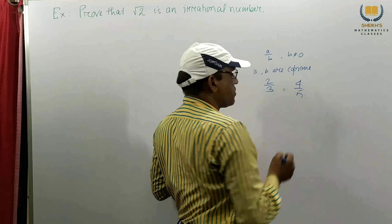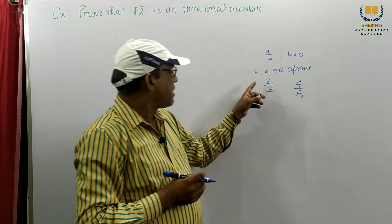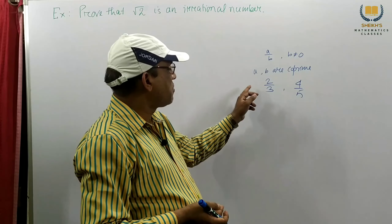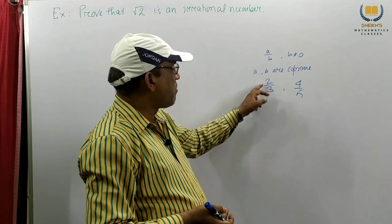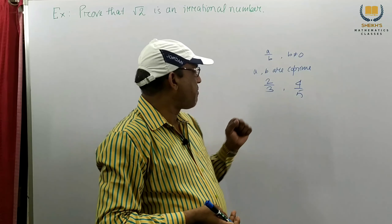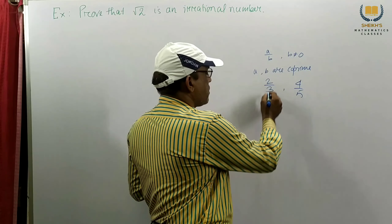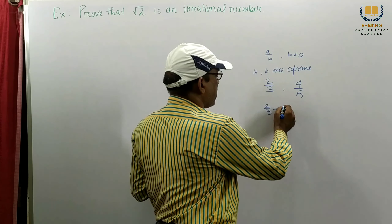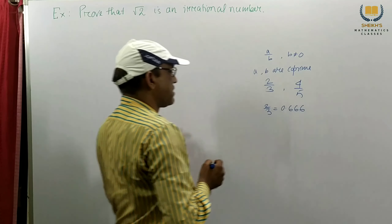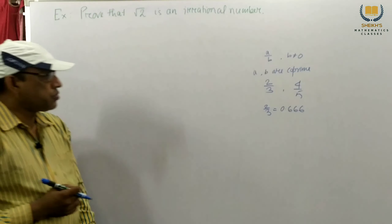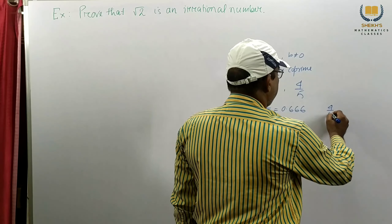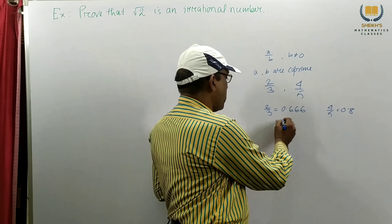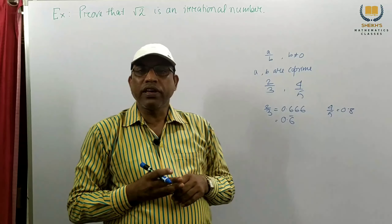Suppose 4 by 5 — this is also a rational number. A rational number is a number which can be expressed in the form A by B, or sometimes we write P by Q form. The denominator cannot be 0, and both numbers should be co-prime. And if we divide this, it has ending digits. Suppose 2 by 3 — if we divide, we get 0.66, and 4 by 5 is 0.8. The digit is ending or repeated, so we can write 0.6 bar also. So this is also a rational number.